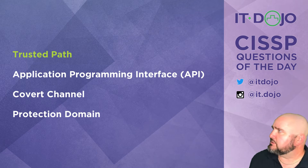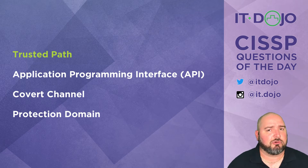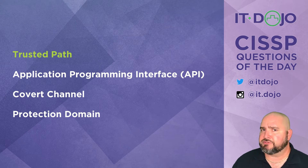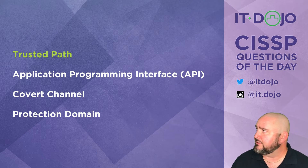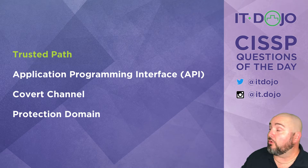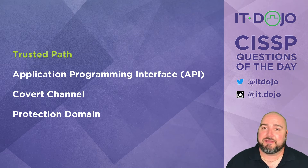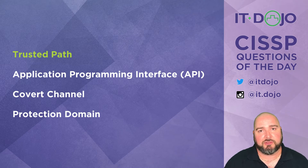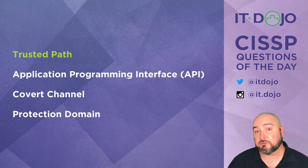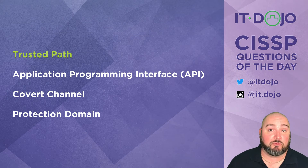The next answer choice to review: an application programming interface — nope. An API is just a way for different components of a system to communicate with each other in a structured way. That's a very generic definition, but that's what it is, and it's not what we're looking for. Covert channel was another choice — nope. A covert channel is a way to communicate information outside normal communication pathways, typically associated with either covert timing channels or covert storage channels. Not what we're looking for.